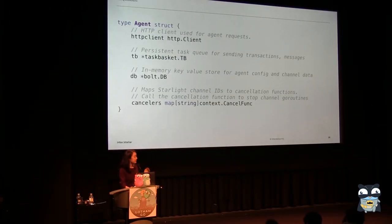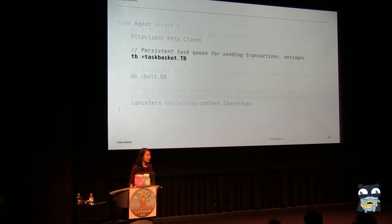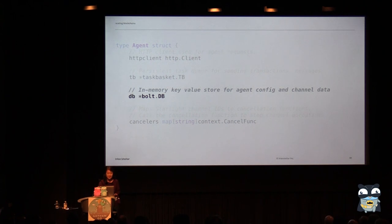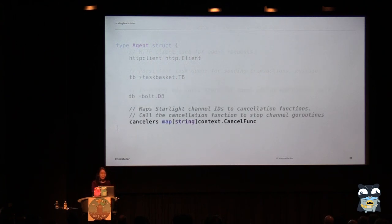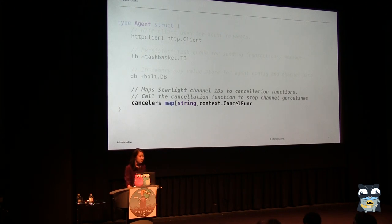Here we have our representation of the agent. We have an HTTP client for agent requests. We've built a persistent task queue for managing all of the Go routines that do things like submit transactions or send messages. Because we want our agents to be really lightweight and easy to run, we use Bolt, which is an in-memory key-value store written in Go, making it super easy to store all of our data and persist state. We also have a map of cancelers that make it really easy to clean up agents, cancel all the running Go routines for each channel, and easily respawn them from the state in Bolt when we restart.